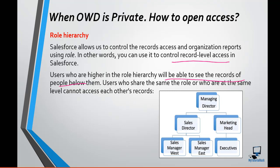In our example, the sales director and marketing head will not be able to see each other's records because they are at the same level. But the sales director will be able to see the records created by sales manager west and sales manager east because those roles are below the sales director.